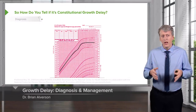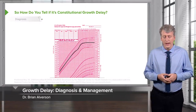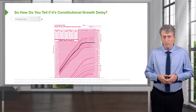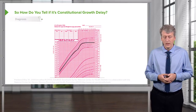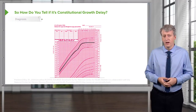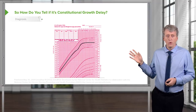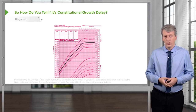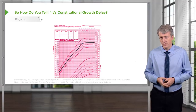How do you tell if it's constitutional growth delay? Those are the children who have a delayed growth spurt. Let's look at an example really carefully. Here is a child who is growing relatively normally along their growth curve, right about the 50th percentile.